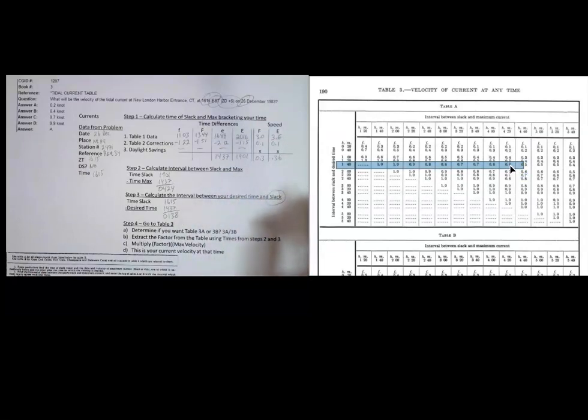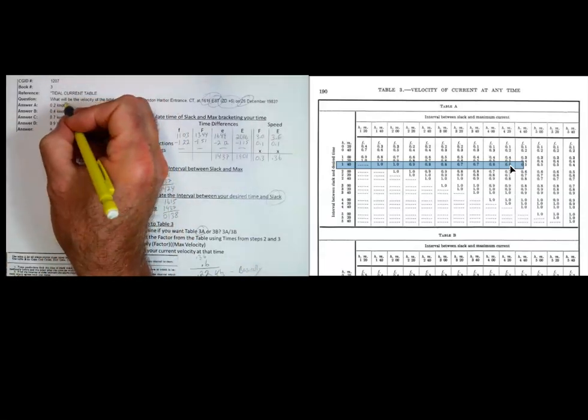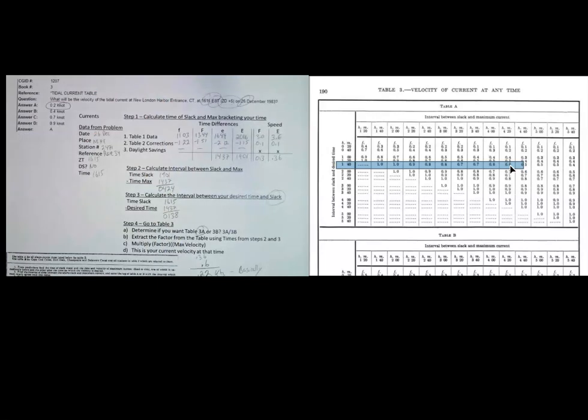We're going to be in 3A. We're going to extract our factor. Our factor is 0.6. And we're going to multiply our factor times our max velocity. We're off of an ebb, that's 0.36. So, 0.6 times 0.36, which gives you 0.22. So, the velocity at 1615 will be 0.22 knots, which is basically slack. And that's the answer. 0.2, that's the answer right there. That's how you do that problem.